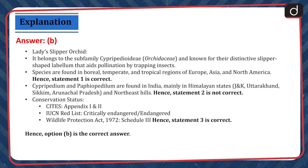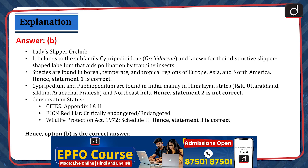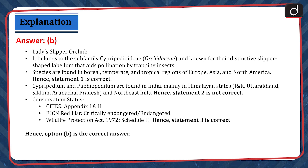The correct answer is option B. The lady's slipper orchid belongs to the subfamily Cypripediodae and is known for the distinctive slipper-shaped labellum that aids pollination by trapping insects. Species are found in boreal, temperate and tropical regions of Europe, Asia and North America. Hence, statement 1 is correct. Cypripedium and Paphiopedilum are found in India mainly in the Himalayan states of Jammu and Kashmir, Uttarakhand, Sikkim, Arunachal Pradesh and the Northeast Hills. Hence, statement 2 is not correct.